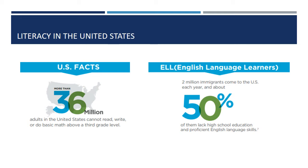Looking at the English language learner population, of the roughly 2 million immigrants who come to the US each year, about 50% of them lack a high school education and proficient English language skills. So of the students we see who are of the immigrant, refugee, and asylum seeker population, lacking literacy skills is a common challenge.